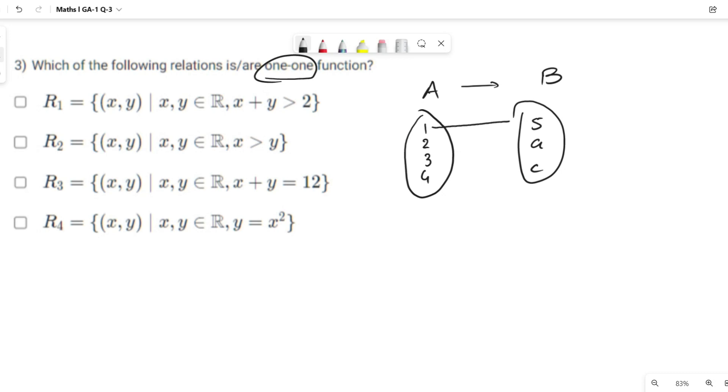Every element of set A is singly mapped to elements of set B, which means this is a 1-1 function.